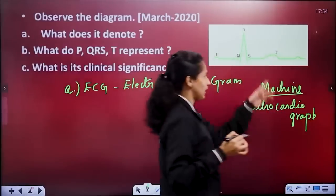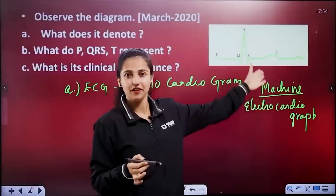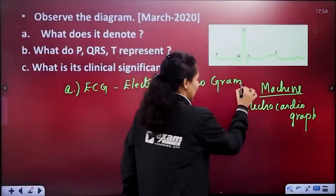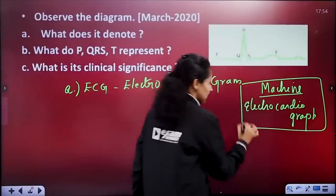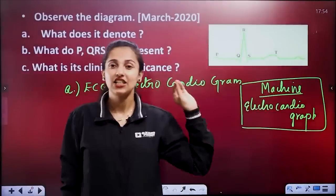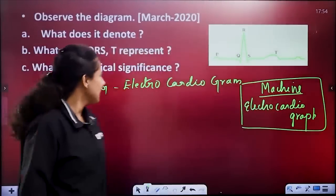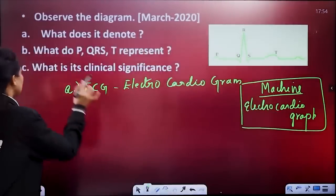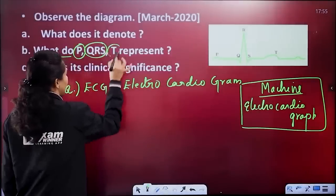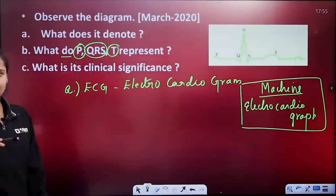We all know that there is a graphical representation, but it's not just a graph — it's an electrocardiogram. Now, what do P, QRS, and T wave represent?